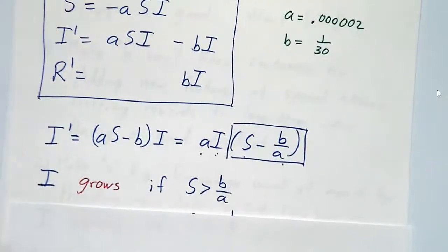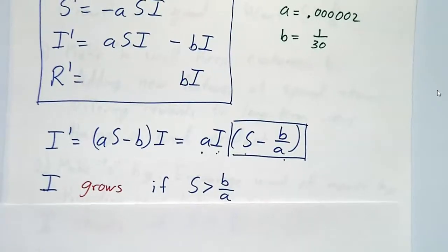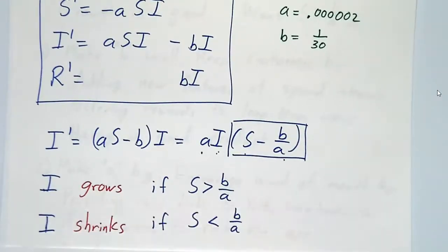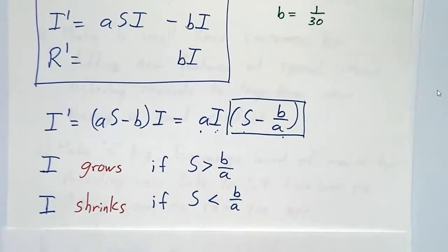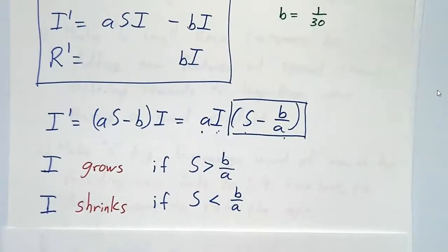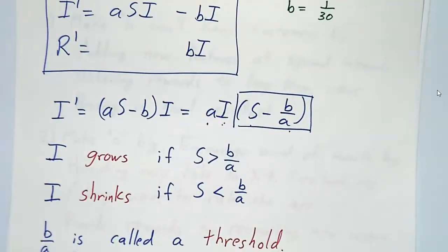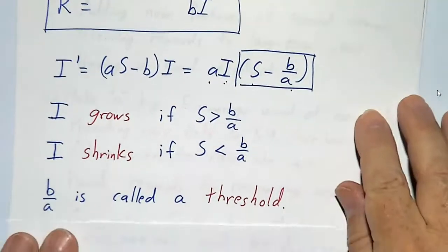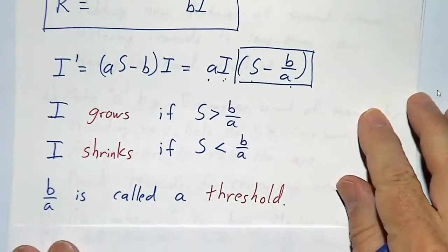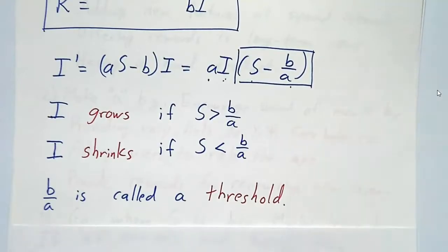In other words, if s is bigger than b over a, then i' is positive and i grows. If s is less than b over a, then i' is negative and i shrinks. So this number b over a is called a threshold. If you're above the threshold, you grow. If you're below the threshold, you shrink.